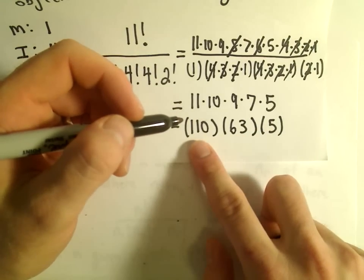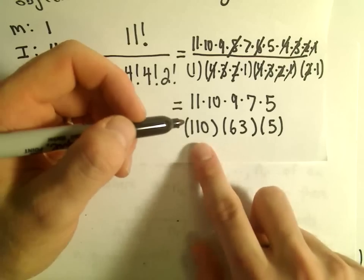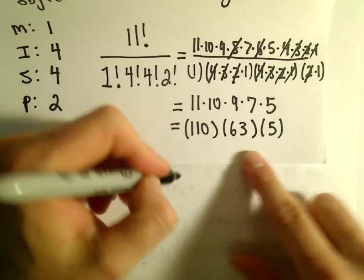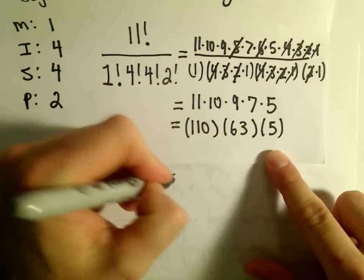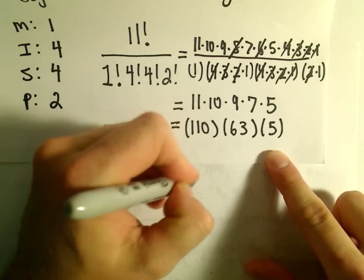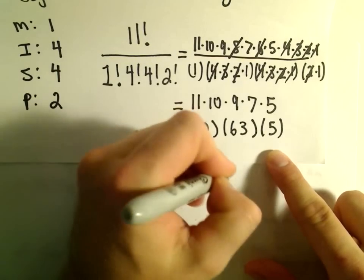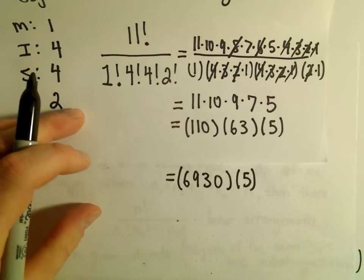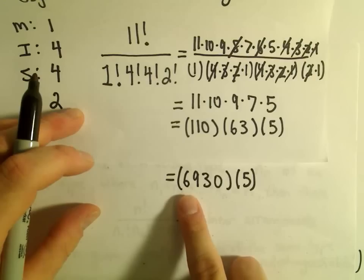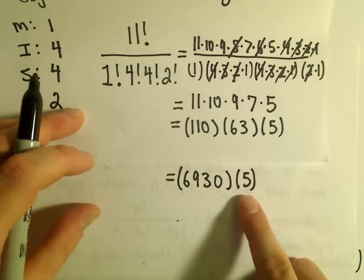60 times 110 would be 6,600 plus another I guess 310, so 110 and 63, that should give us 6,930.